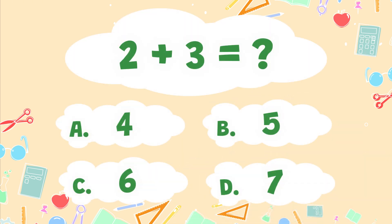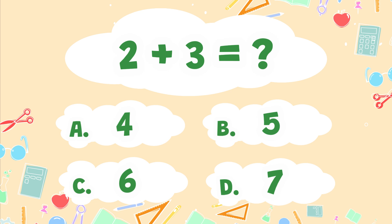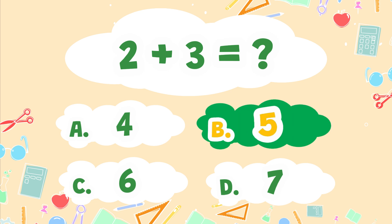What is 2 plus 3? A. 4, B. 5, C. 6, D. 7. The correct answer is B. 5.